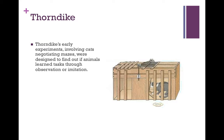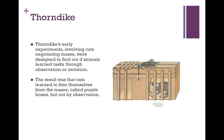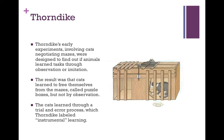Thorndike's early experiments involving cats negotiating mazes were designed to find out if animals learn tasks through observation or imitation. The result was that cats learn to free themselves from the mazes, called puzzle boxes, but not by observation. The cats learned through a trial and error process which Thorndike labeled instrumental learning.